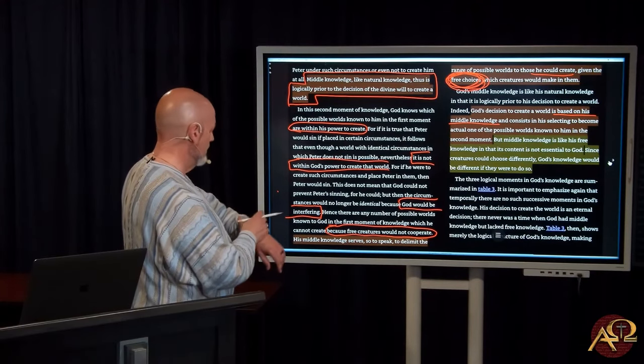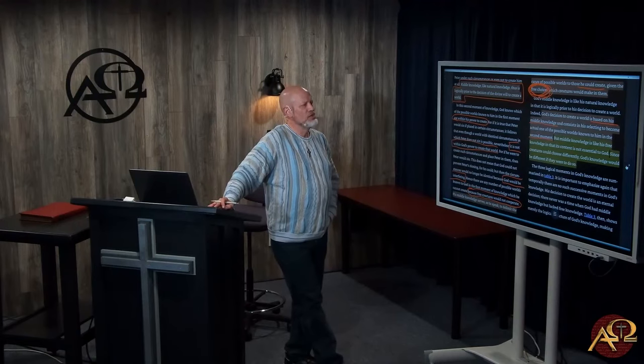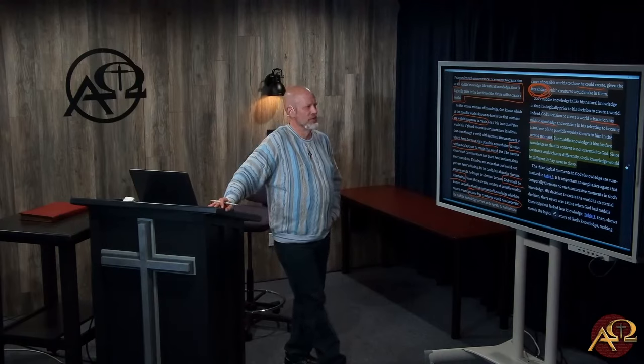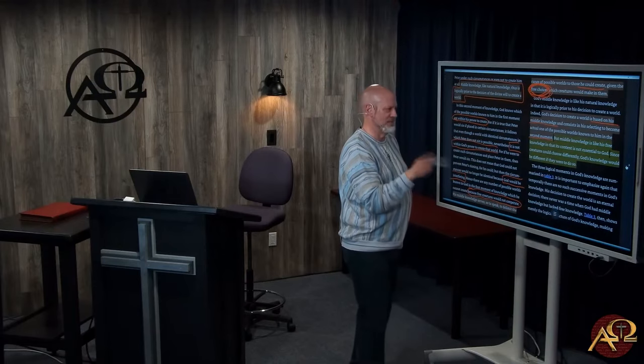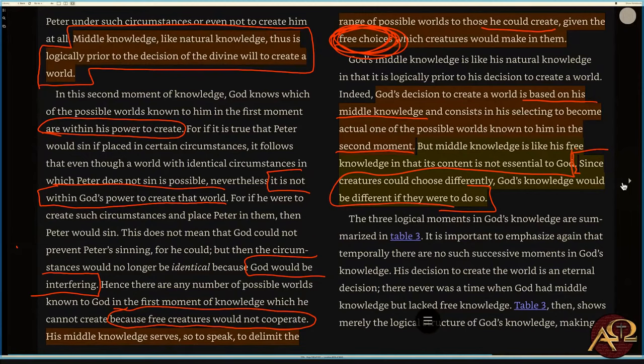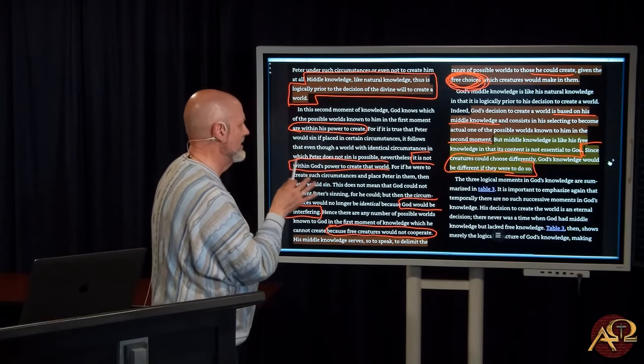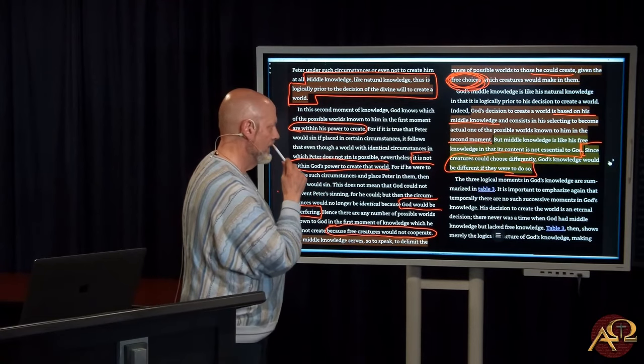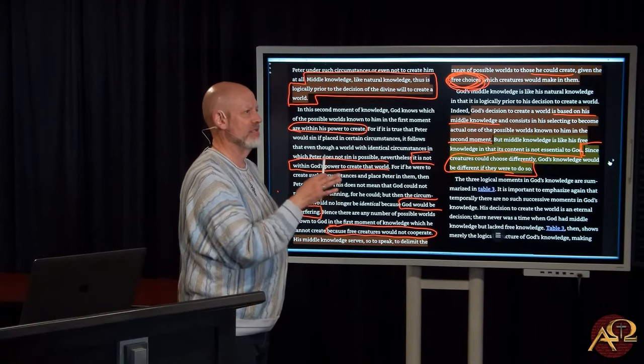So God's decision to create a world is based on his middle knowledge and consists of his selecting to become actual one of the possible worlds known to him in the second moment. Middle knowledge is like his free knowledge in that its content is not essential to God. Since creatures could choose differently, God's knowledge would be different if they were to do so. It's not as clear as I'd like it to be, but if this is about middle knowledge, then what action logically is prior to and determinative of God's action of creation?